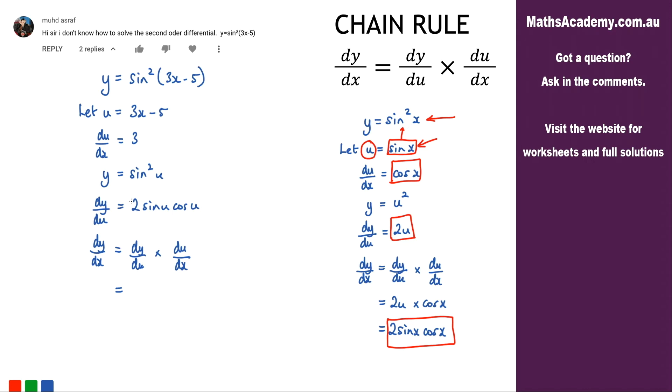Now dy by du that's this bit here so dy by du is 2 sine u cosine u. So we're multiplying that by du by dx which is here and that is 3, so I'm multiplying by 3.